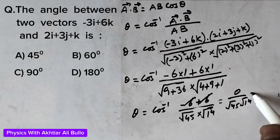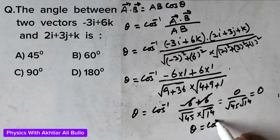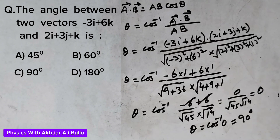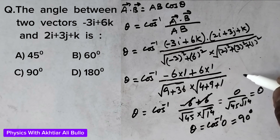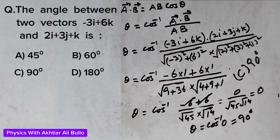The angle is cos inverse of 0, and the value of cos inverse 0 is 90 degrees. So the correct option is C: 90 degrees.